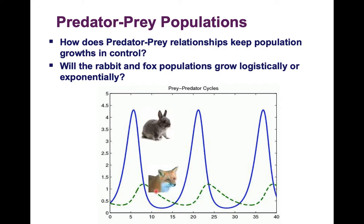Notice how these populations are controlling each other. As the prey population goes up, so does the predator population. With many predators eating lots of prey, the prey numbers drop. As prey numbers drop, predator numbers also drop. These populations are controlling each other in a good way — you don't want either to grow out of control. Predator-prey interactions are actually good interactions; we need them as part of a healthy ecosystem.